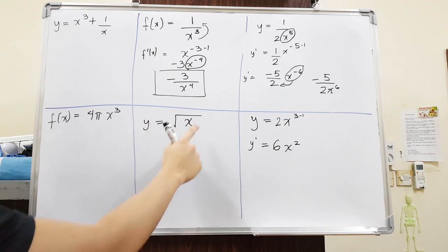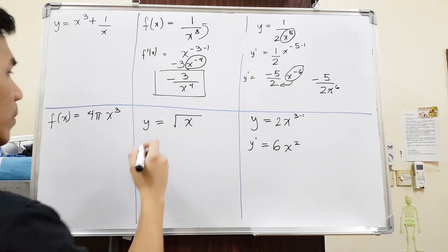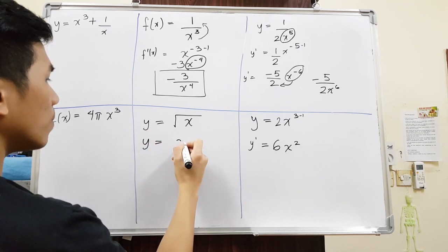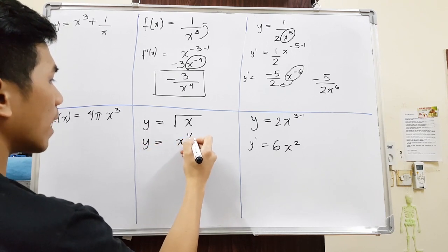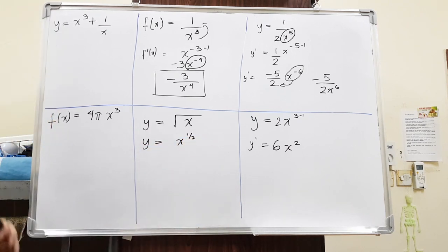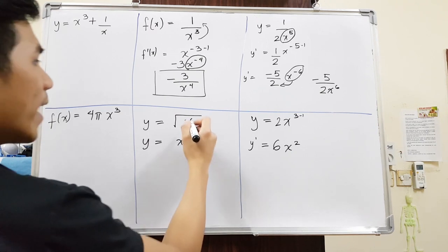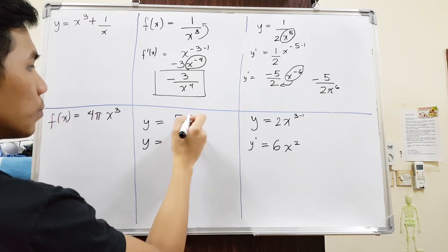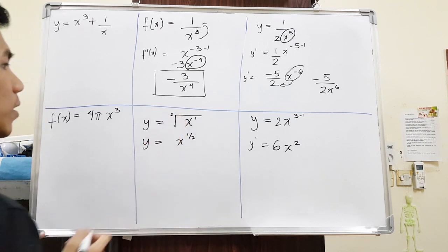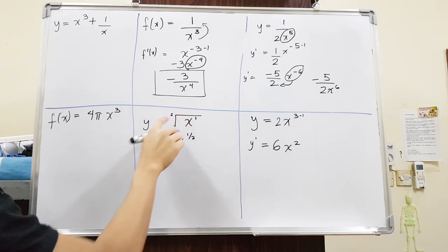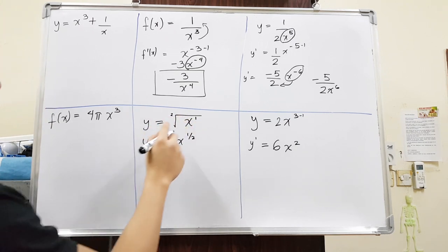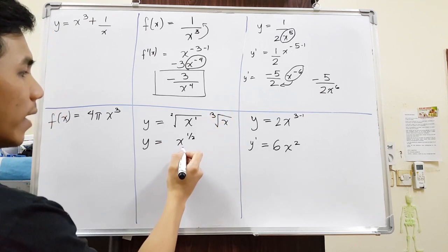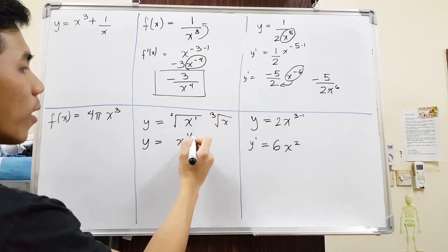For example, they give you something like square root of x. When you say square root of x, it can be written as y equals x to the power of one half. The x has a power of 1, and square root means there's an imaginary 2 underneath, so it means 1 over 2. If they say cube root, then we write x to the power of one third.